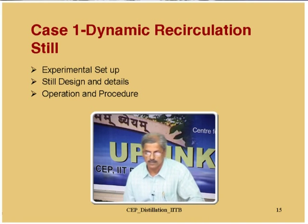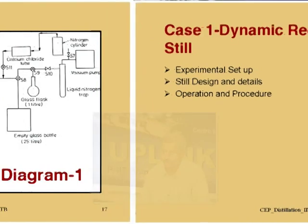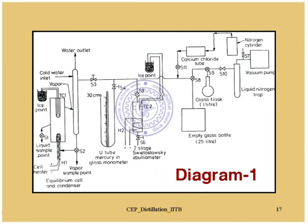Let us see the experimental setup. This is a sketch of the experimental setup one can have for VLE determination using a dynamic still. If you have the notes, you can keep that sketch open. There are three major things we can see here. The first is the cell — the heart of the equipment setup — along with the ebulometer. The ebulometer and the dynamic VLE still form the main part of the experimental setup.